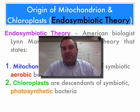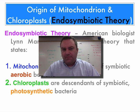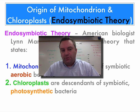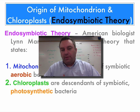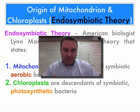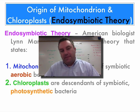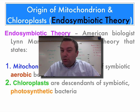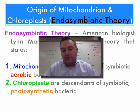Welcome to our ninth and final episode from our Evolution 2 series. This episode is going to deal with a very important theory when it comes to evolution — how did mitochondria and chloroplasts evolve. As you learned in chapter seven when we learned about cells, mitochondria and chloroplasts are probably two of the top three important organelles.